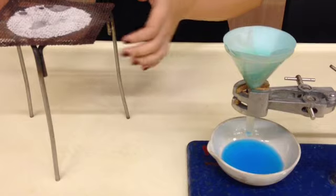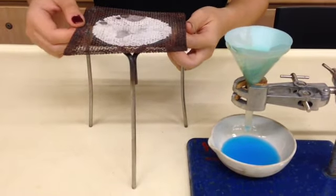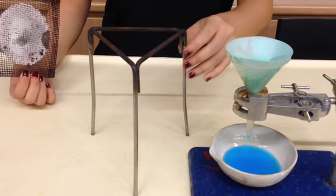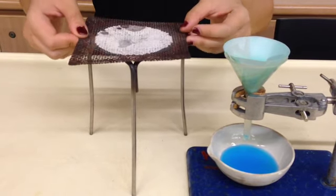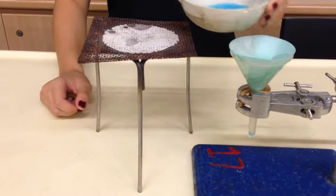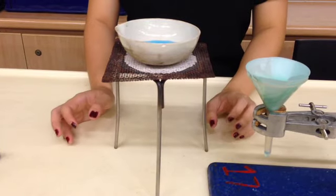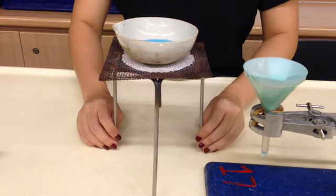When we do that, there are a few important things to take note of. Firstly, the apparatus. We have this thing called the tripod stand, it has three legs. On top of the tripod stand, we put the wire gauze. Then we take the evaporating dish with copper 2 sulfate solution, and we put it on top of the wire gauze like this. Make sure that everything is stable, so that you don't have to touch it when you start heating.